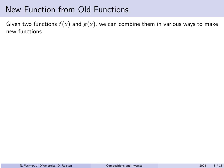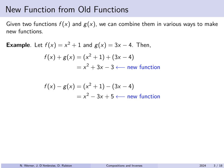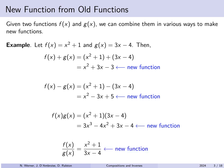Suppose you have two functions f and g. There are many different ways we could combine them to make new functions. For example, if f is x squared plus 1 and g is 3x minus 4, we could add them to get x squared plus 3x minus 3, take the difference to get x squared minus 3x plus 5, take the product to get 3x cubed minus 4x squared plus 3x minus 4, or take the quotient f(x) over g(x), which is x squared plus 1 over 3x minus 4.